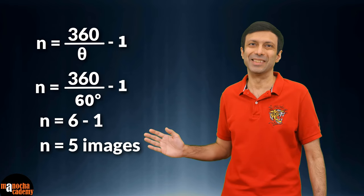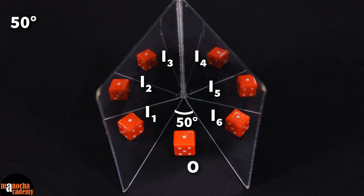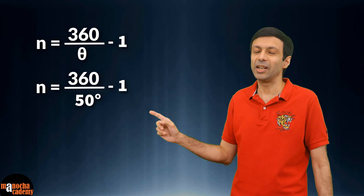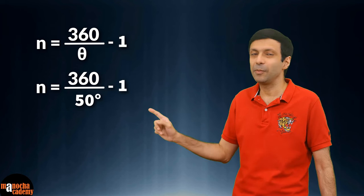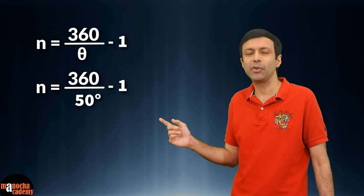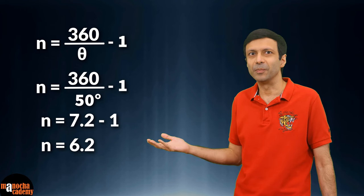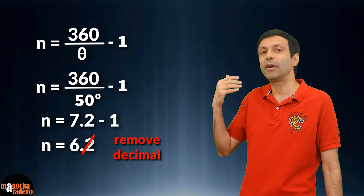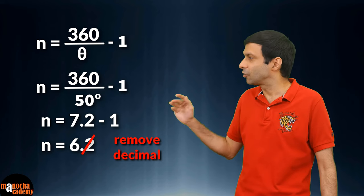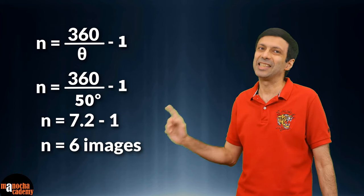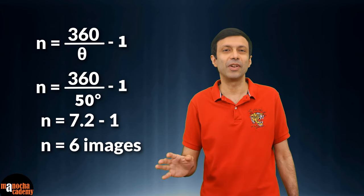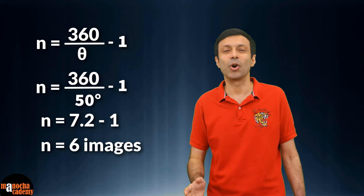Now I'm going to decrease the angle between the two mirrors to 50 degrees. Can you see there are now 6 images? Let's try our formula: n = 360 ÷ 50 − 1 = 7.2 − 1 = 6.2. But remember, you cannot get a fractional number of images — do not round off the number; just remove the decimal. So we delete the 0.2, giving us 6 images. The formula gives the correct answer as long as you use it correctly: just throw away the decimal.